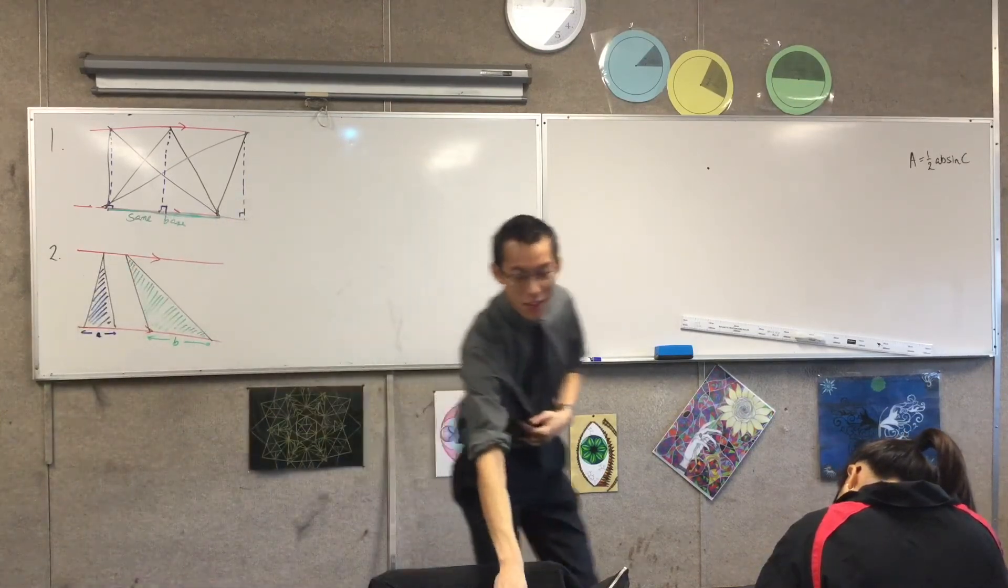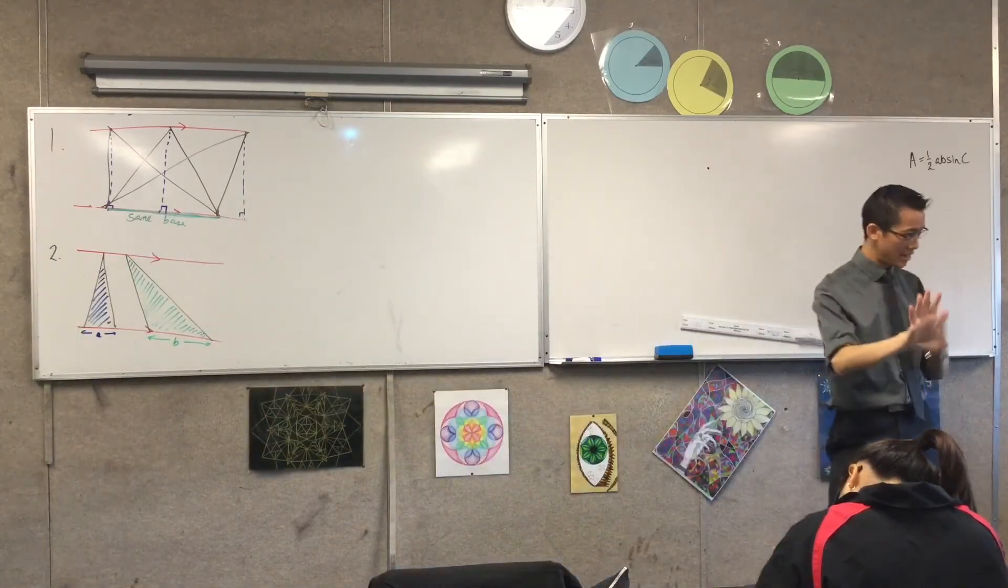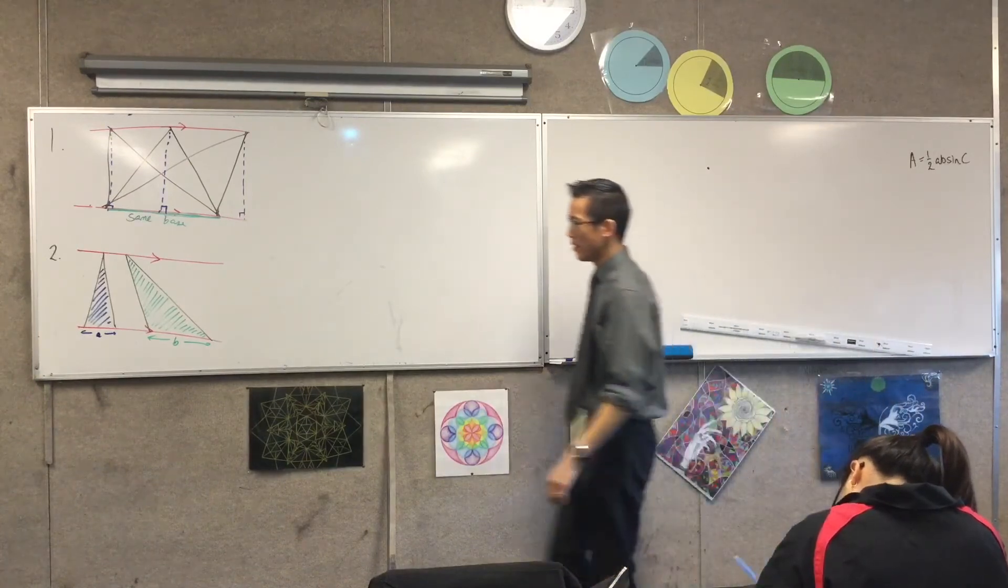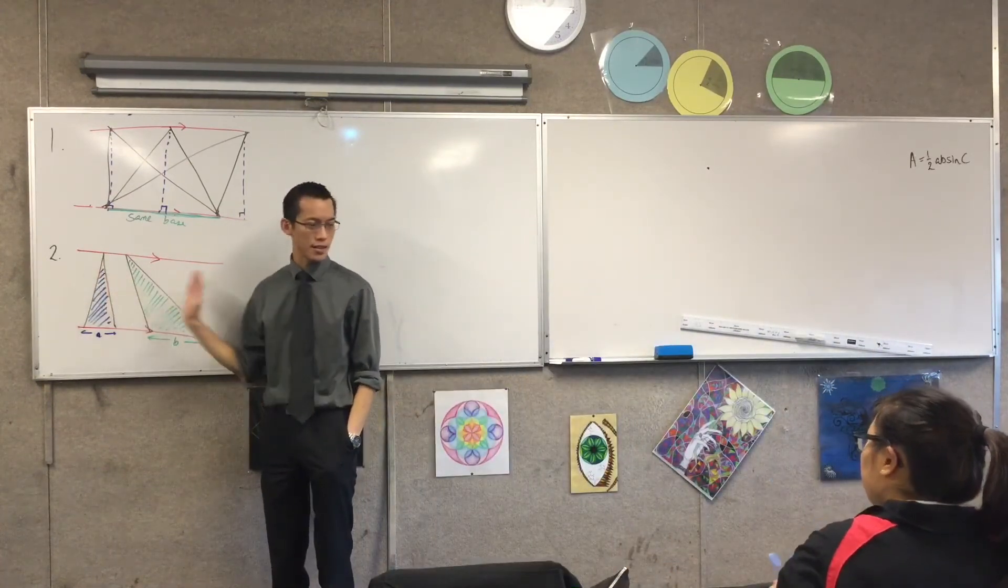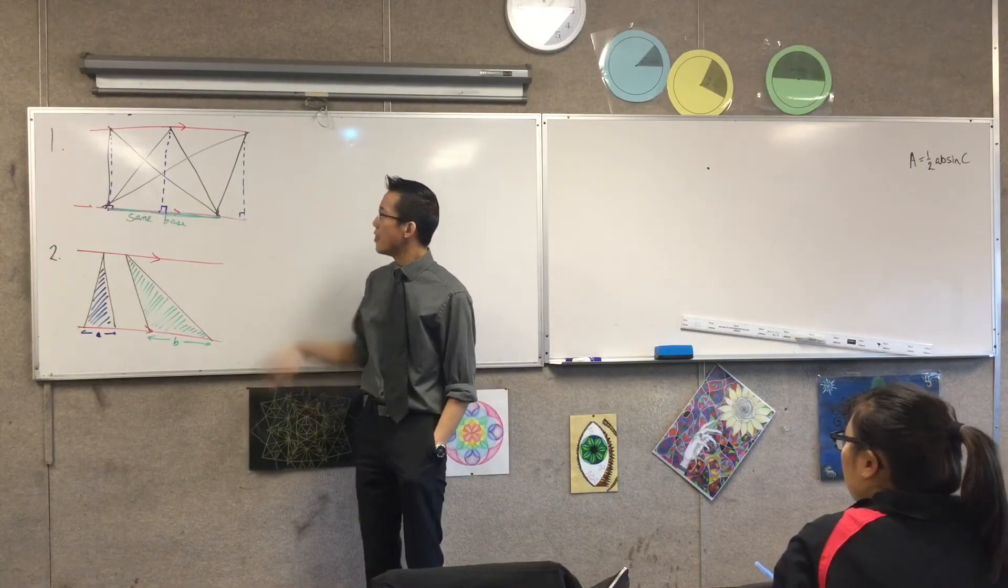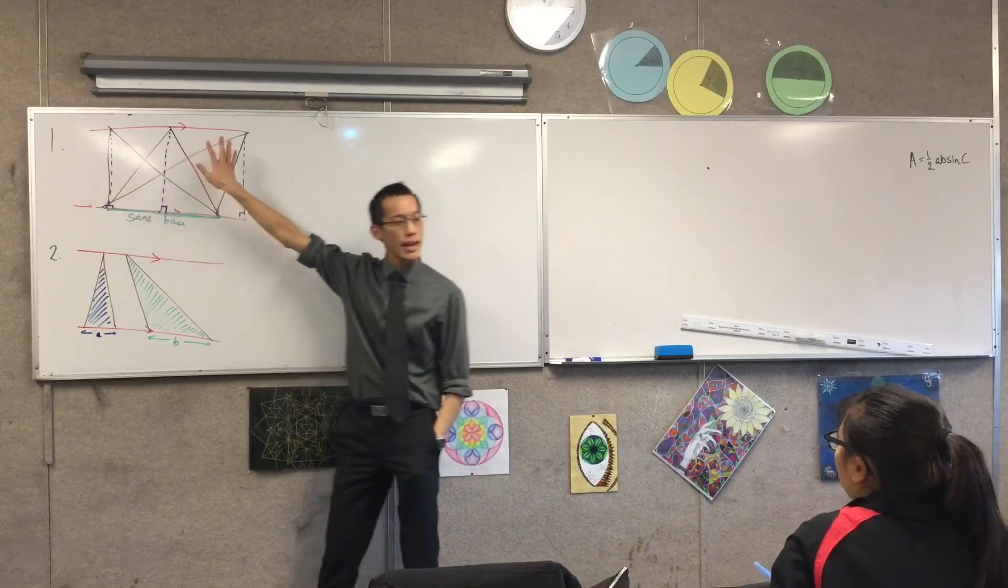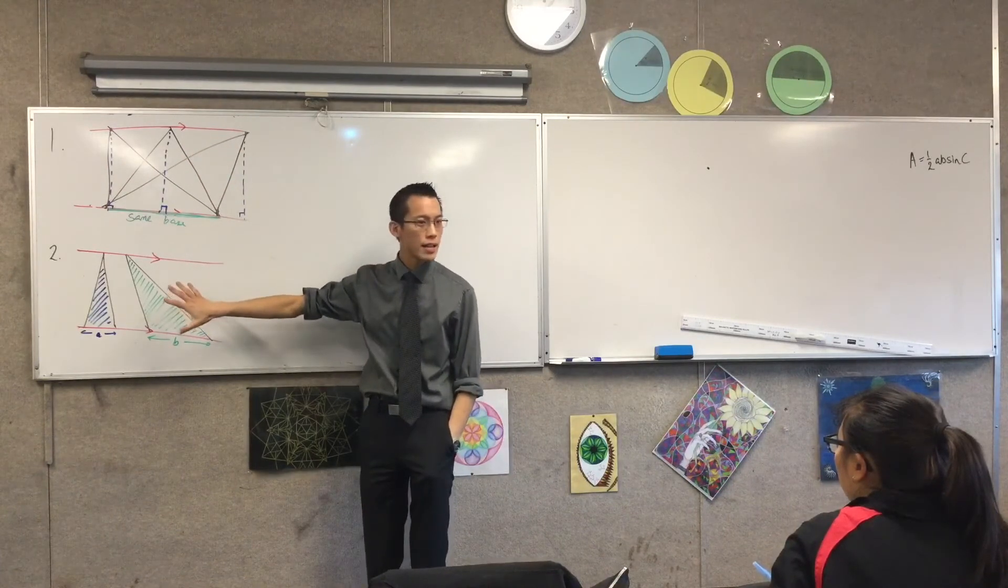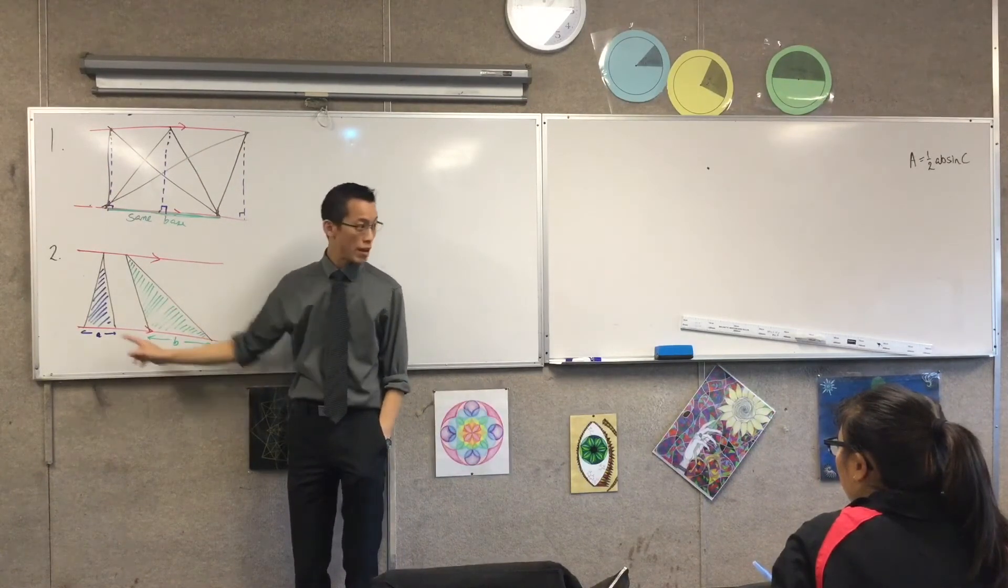If the ratios of their bases are A to B, A to B, because the only other measurements that is different is the perpendicular height, but that's equal in both cases, then here the areas are all the same. Here the areas are not the same, but they're in this ratio. Can you see that?